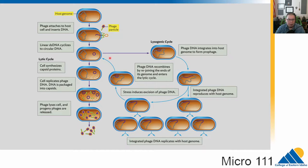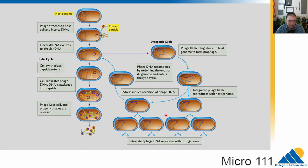The other stage is the lysogenic cycle, where this piece of DNA can incorporate into the host's genome. It might sit there dormant for long periods of time, so the host cell might replicate itself several times. Usually there are stresses — things like nutrient stress or temperature — that will reactivate the phage DNA, and it will unincorporate from the genome and move out of the lysogenic cycle back into the lytic cycle.